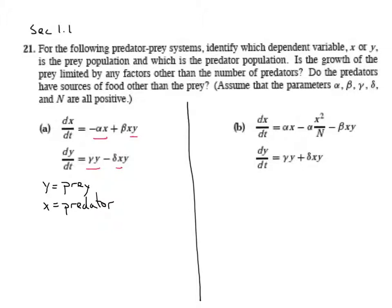The question says, is the growth rate of the prey limited by any factors other than the number of predators? Well, as we look at this model for a prey, we see, no, if x is, if this term is missing,